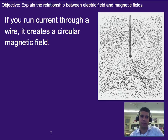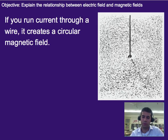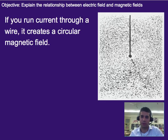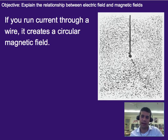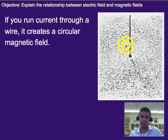So let's review real fast. If you run current through a wire, it creates a circular magnetic field. So electricity can generate a magnetic field. That's not too useful because most magnets — we tend not to deal with a circular magnetic field. We usually want a strong end of a magnet to be a little bit more linear or straight-lined if possible.